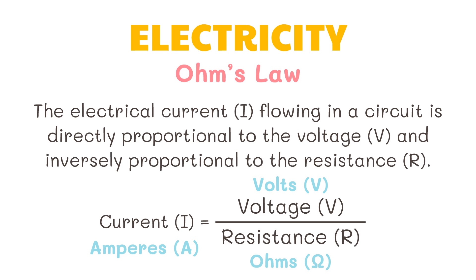By knowing any two values of the voltage, current, or resistance quantities, we can use Ohm's law to find the third missing value. Ohm's law is used extensively in electronics formulas and calculations, so it is very important to understand and accurately remember these formulas.